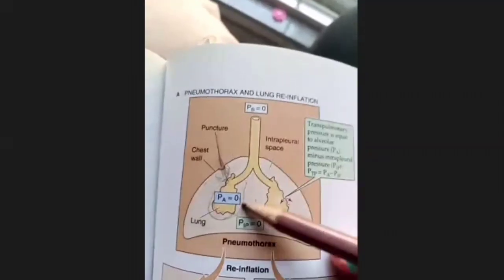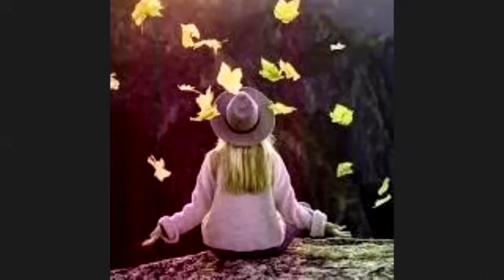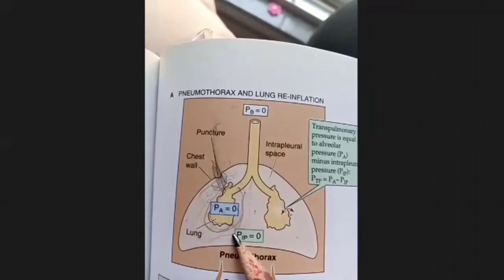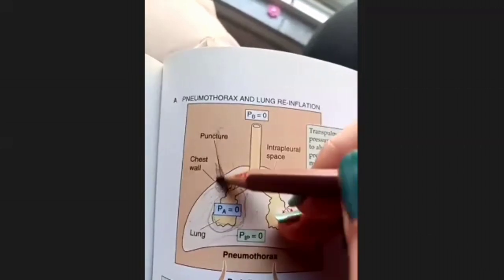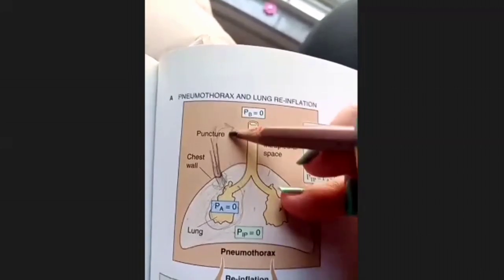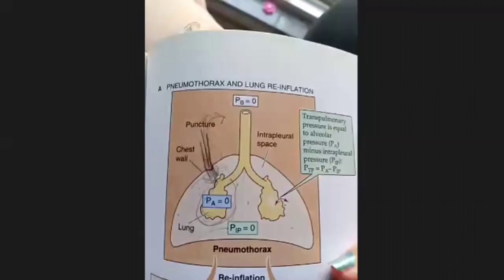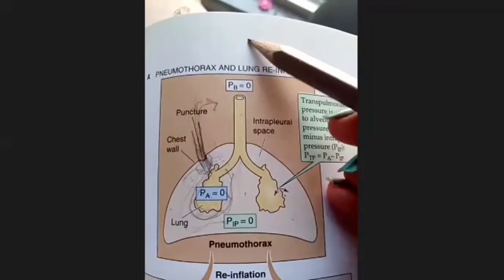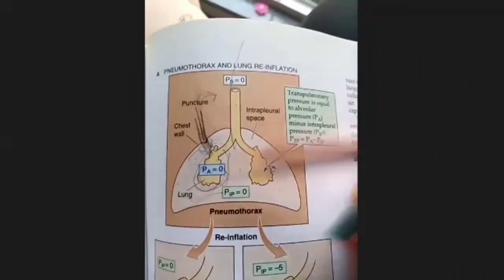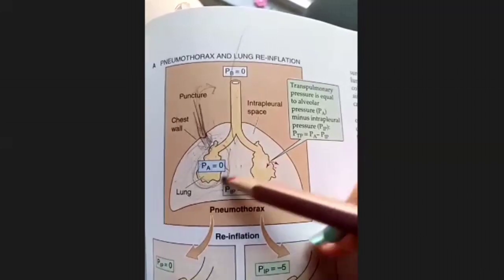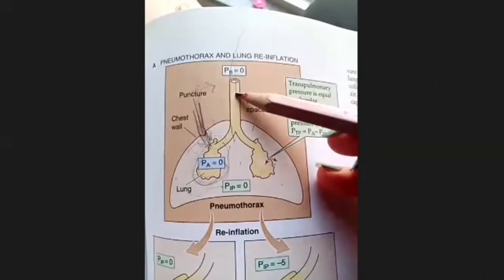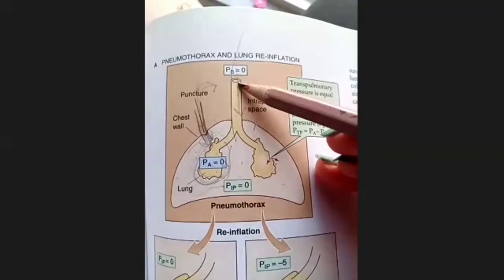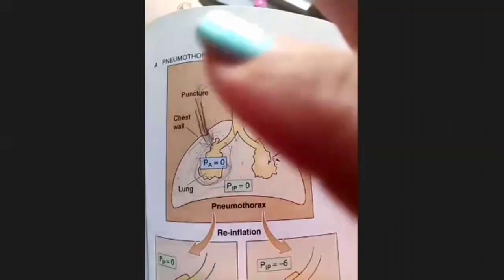We want the transmural pressure of the lungs to return so that they expand again. There are two ways to do this. One is to insert a tube, pump the air out, and recreate negative pressure in the intrapleural space — for this, a chest tube is inserted wherever a puncture has occurred, and air or any accumulated fluid is suctioned out to create negative pressure and increase transmural pressure. The second method is the ventilator — the ventilator forcefully sends air inside, creating transmural pressure, and the lung starts expanding. When the ventilator sends positive pressure, the lung expands; when it stops, the lung collapses and expires again.